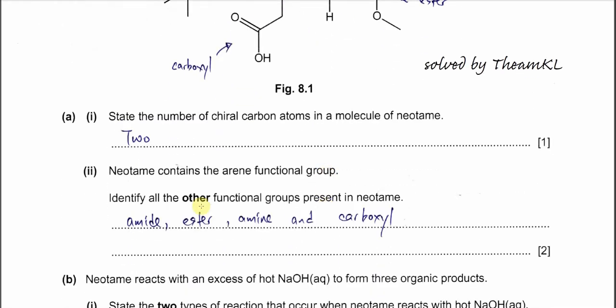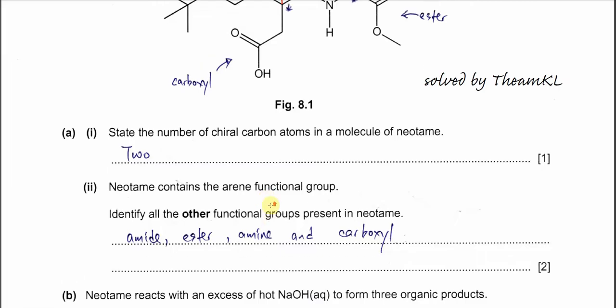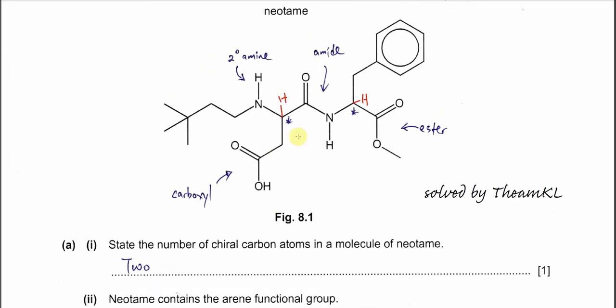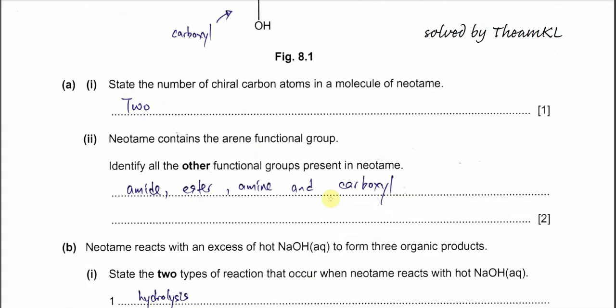This molecule contains the arene functional group. Identify all the other functional groups in this Neotame. It's quite easy. Other than this arene, it has ester, this one, and amide, this one. This is a secondary amide and this is carboxyl or carboxylic acid. So just list out all of this.